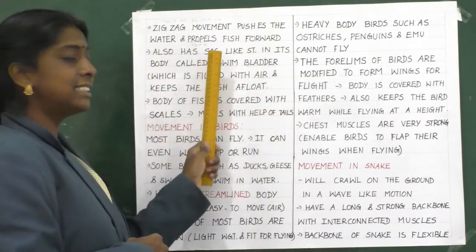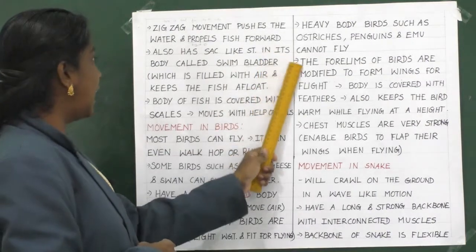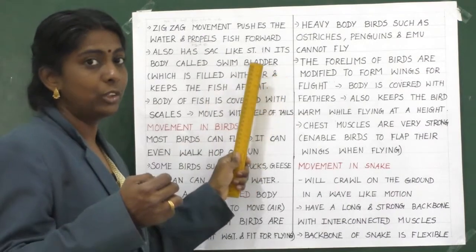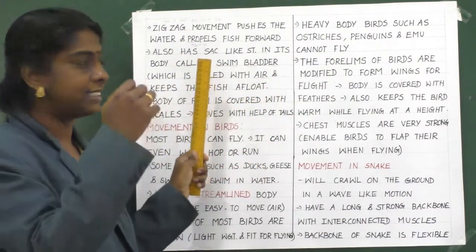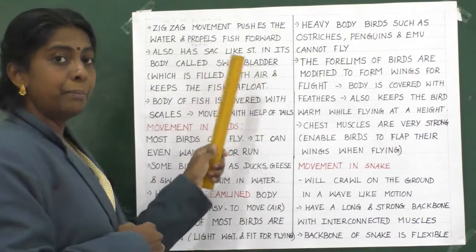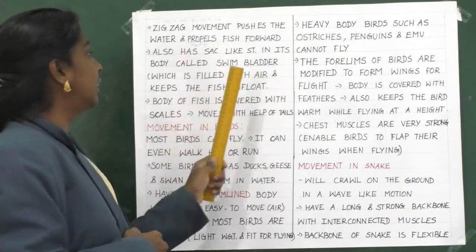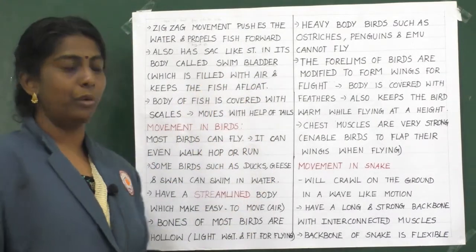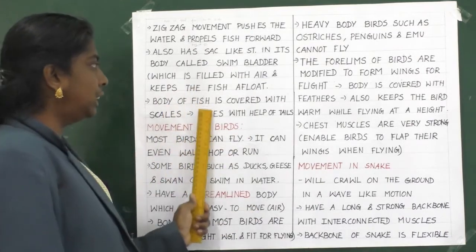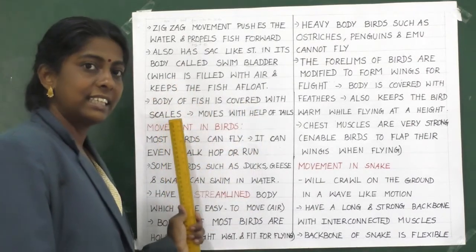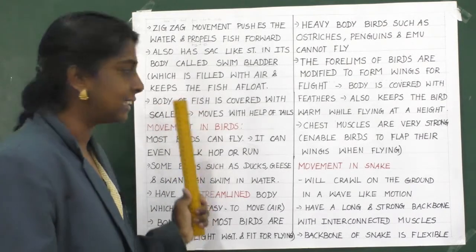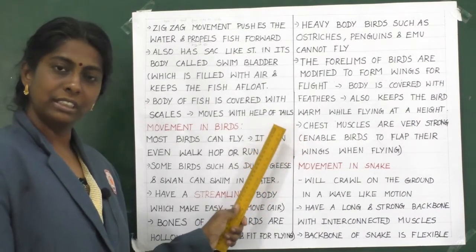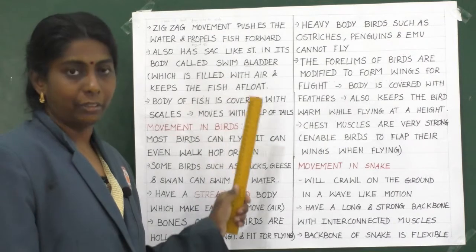The fish also has a sac-like structure in its body called a swim bladder. This swim bladder is filled with air and keeps the fish afloat. The body of a fish is covered with scales, and it moves with the help of fins.